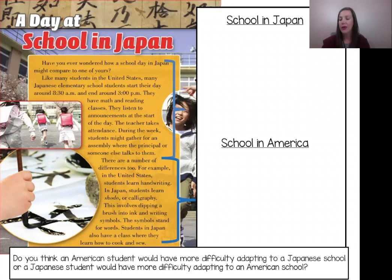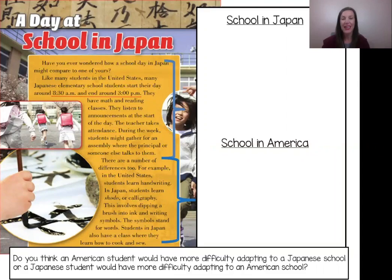Have you ever wondered how a school day in Japan might compare to one of yours? Like many students in the United States, many Japanese elementary school students start their day around 8:30 a.m. and end around 3 p.m. They have math and reading classes. They listen to the announcements at the start of the day. The teacher takes attendance. During the week, students might gather for an assembly where the principal or someone else talks to them. I noticed that school starts at 8:30 and ends around 3 p.m. for both students in Japan and students in the United States — this is a similarity between Japanese schools and American schools. Let's add it to our notes.